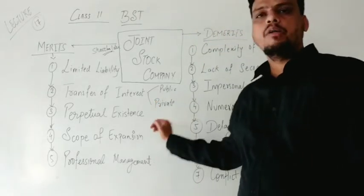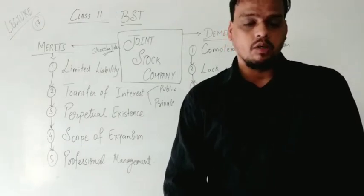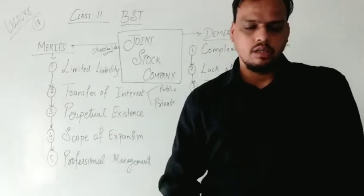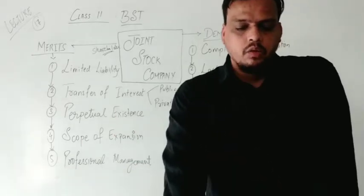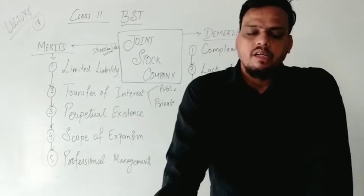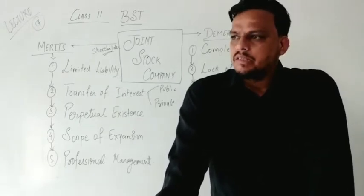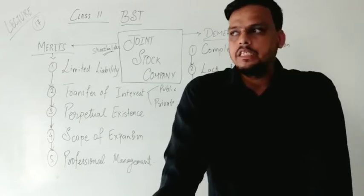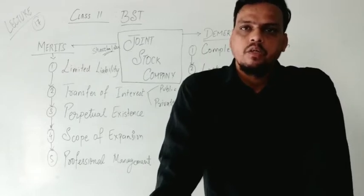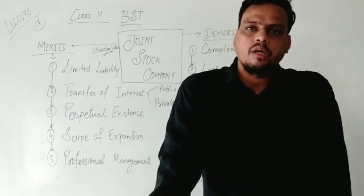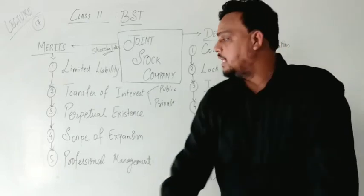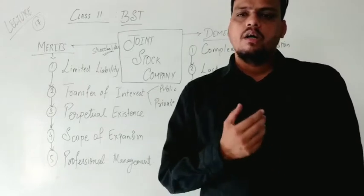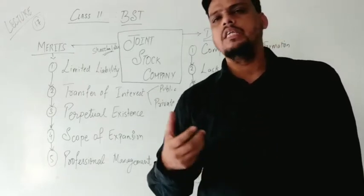In the private sector, it is not easy to transfer shares from one person to another — it is restricted. So we clearly see that ownership is easily transferred in the public sector, but in the private sector it is restricted. Transfer of interest in joint stock company, when talking about the public sector, means we can easily transfer ownership.